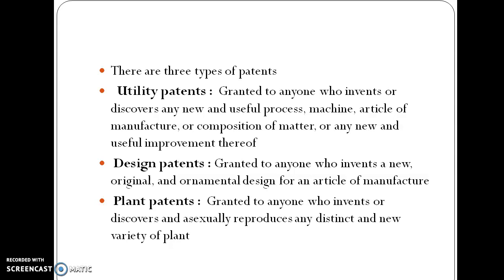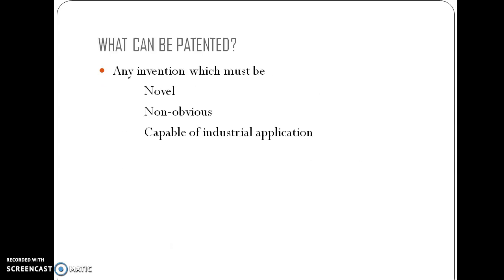What kind of invention can be patented? The invention should be novel, non-obvious, and should have some industrial application. When an invention possesses these three characteristics, that particular invention can be patented.